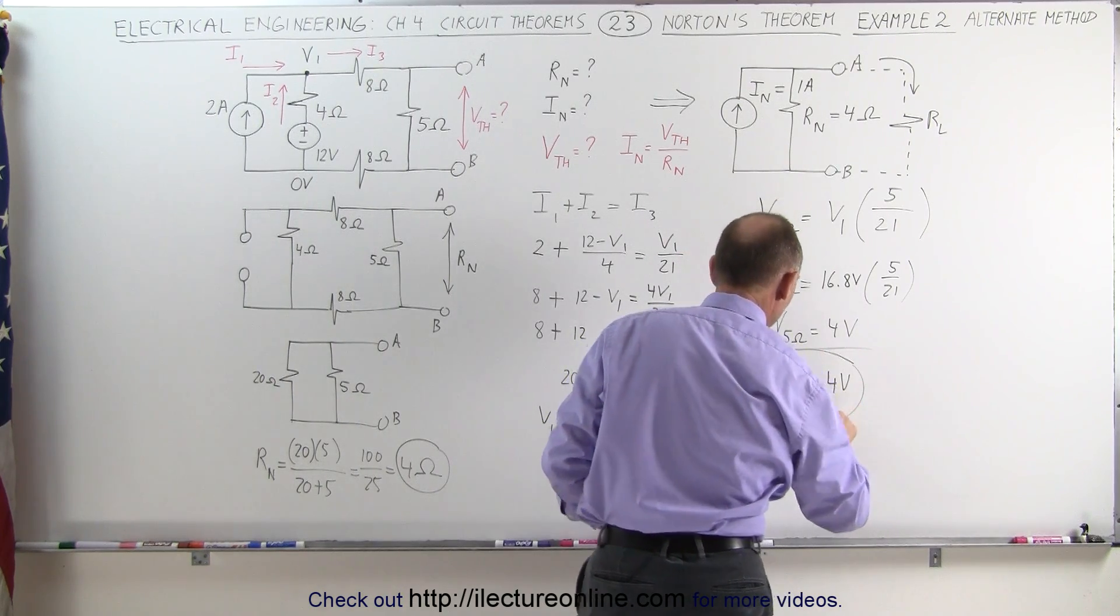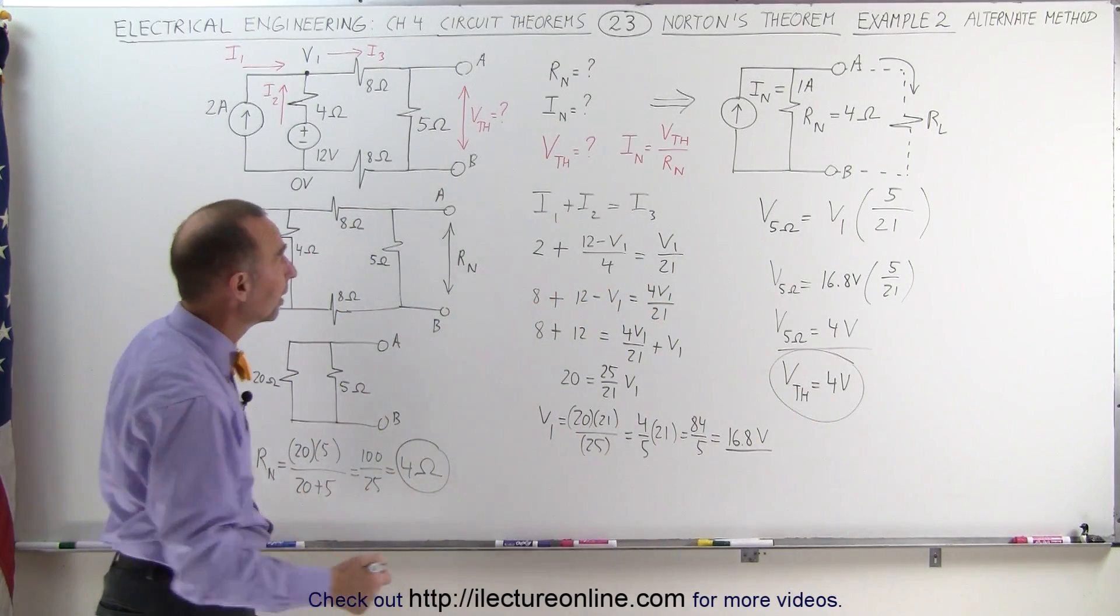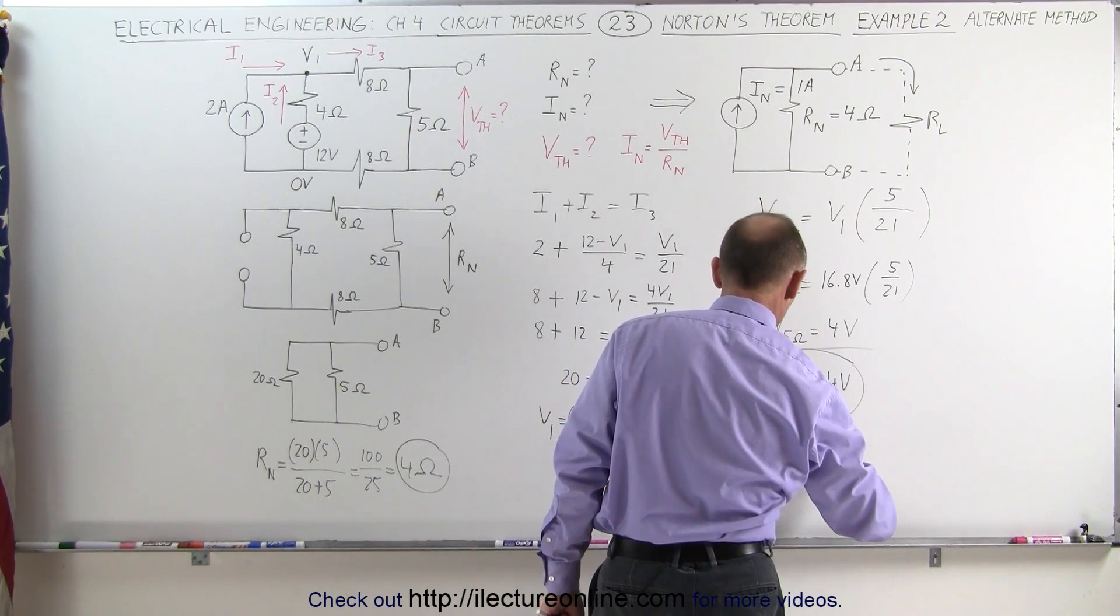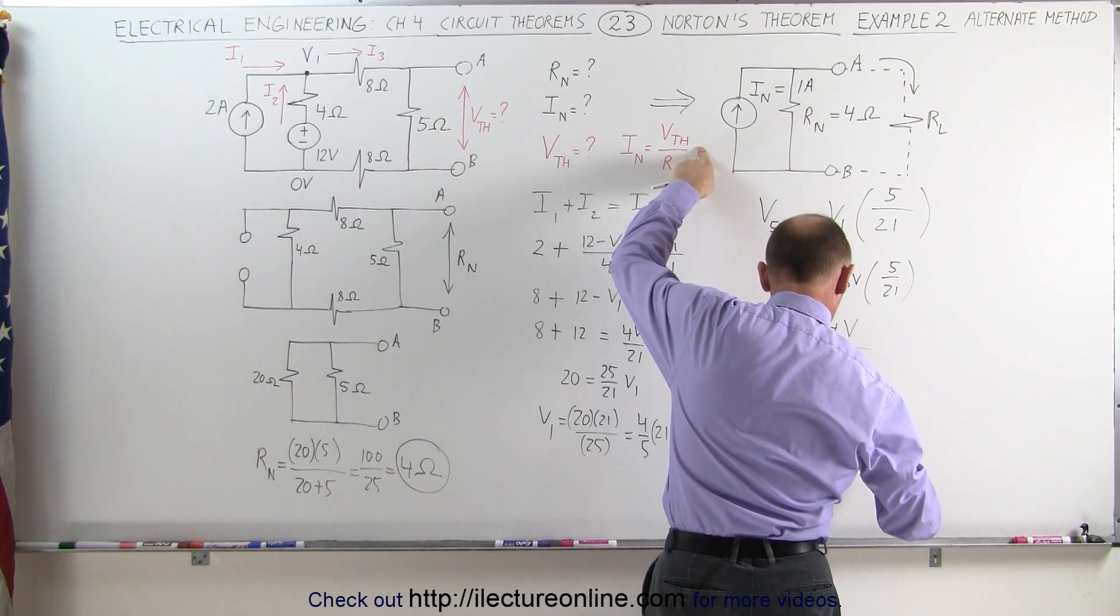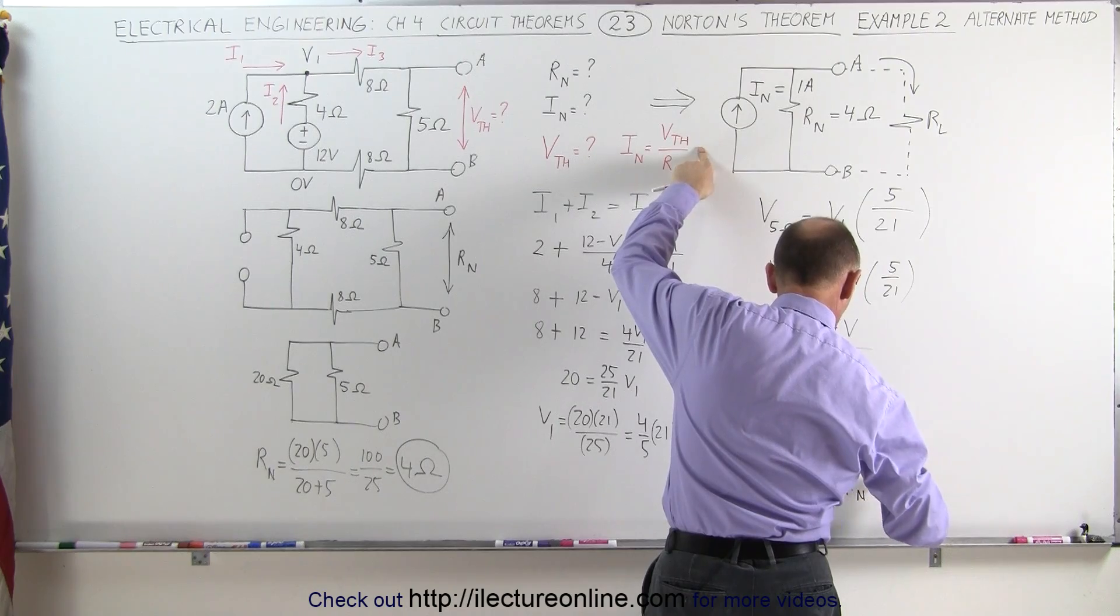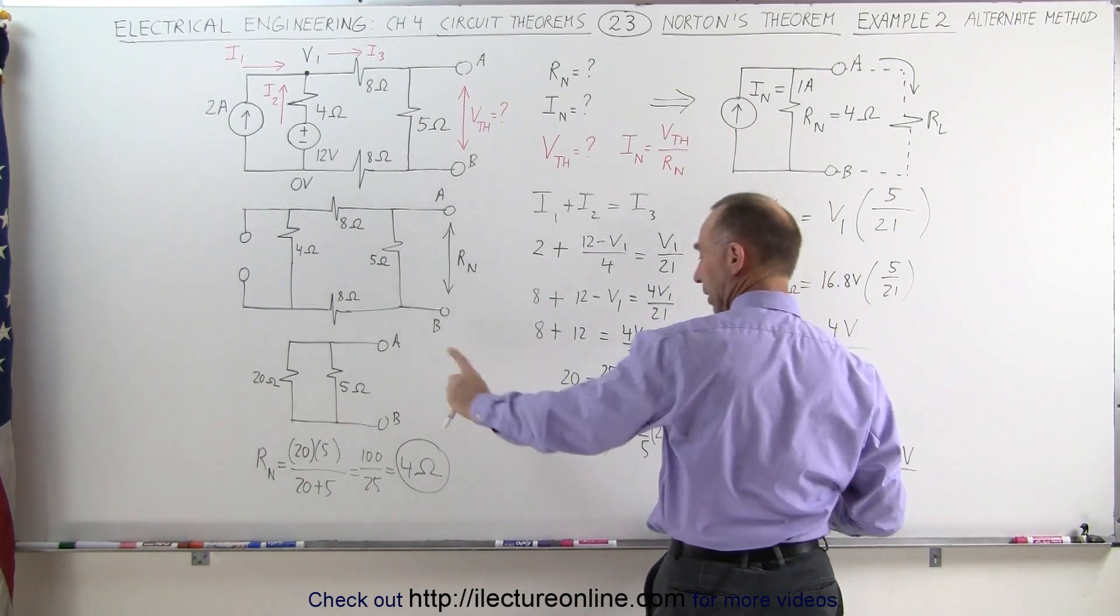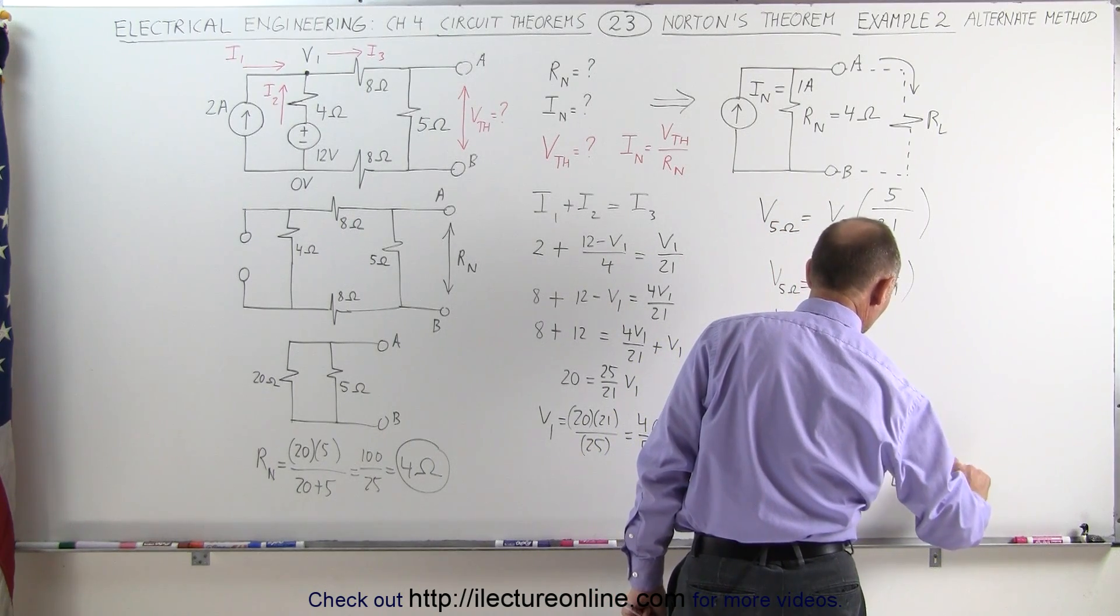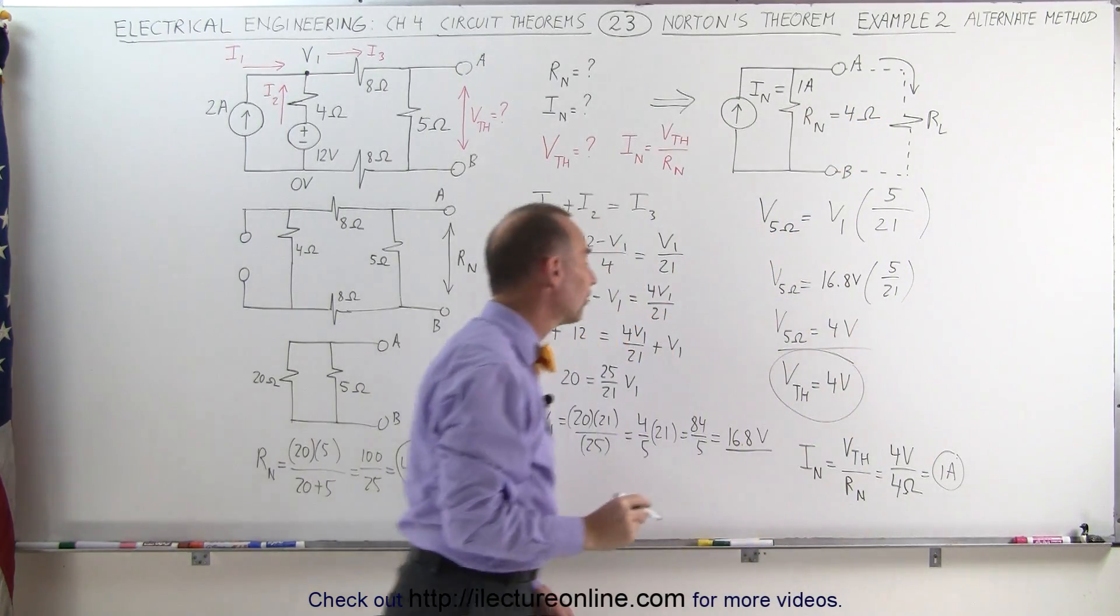Now that we have the Thevenin voltage and we have the Thevenin or Norton resistance, then we can go back to this equation, realizing that I Norton, the Norton current, is equal to the Thevenin voltage, voltage Thevenin, divided by the resistance Norton, which is the same as the resistance Thevenin, which is equal to 4 volts divided by 4 ohms, which is equal to 1 amp, and that's the same answer we got in the previous example.